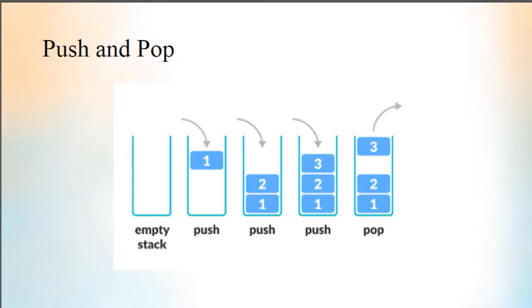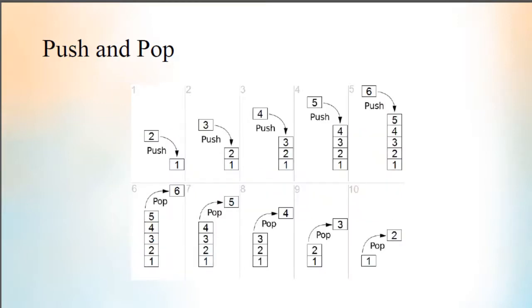Let us look at another example. Here, the element one is already in the stack. Then two is pushed onto the stack, three is pushed, then four, five, and six. When deleting is done, the last inserted element will be deleted first. So six is deleted first, then five, then four, then three, and then two. Both push and pop operations happen at one end of the stack, and that is the top of the stack.